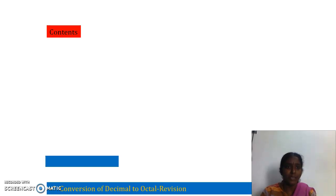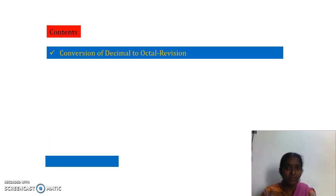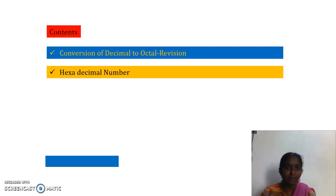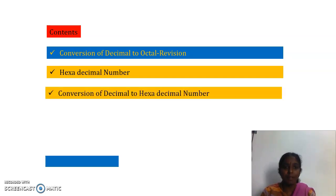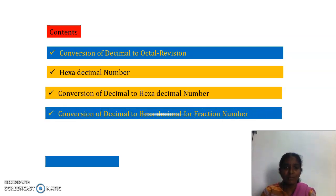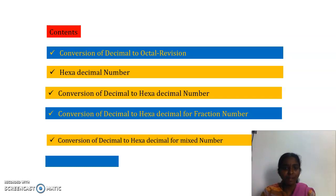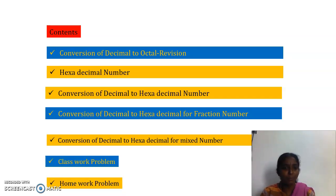First we will have a revision on conversion from decimal to octal system. Then we will move to hexadecimal number, then conversion of decimal to hexadecimal number, then conversion for fractional numbers, and then for mixed numbers. Similarly we will move to classwork problems and homework problems.